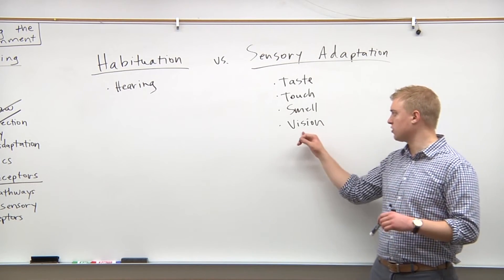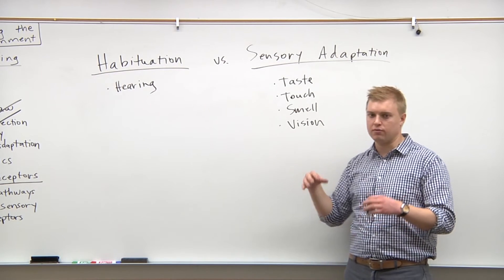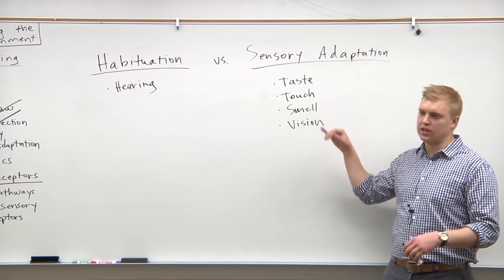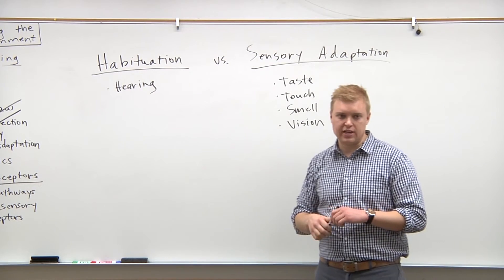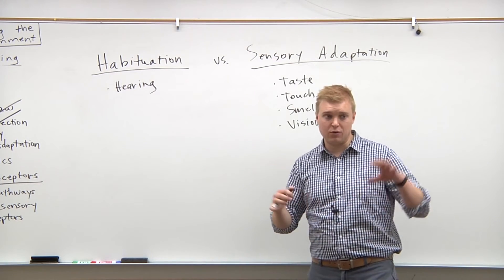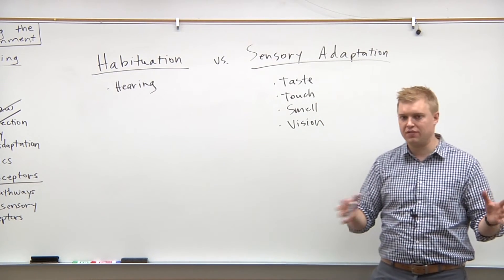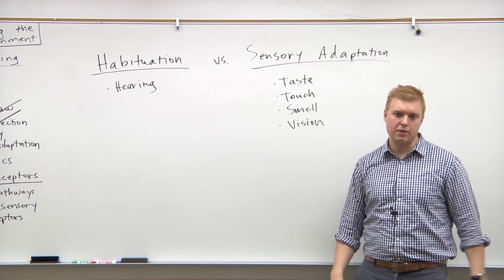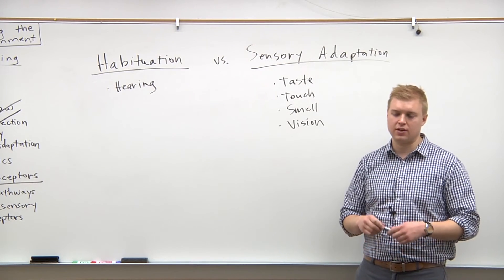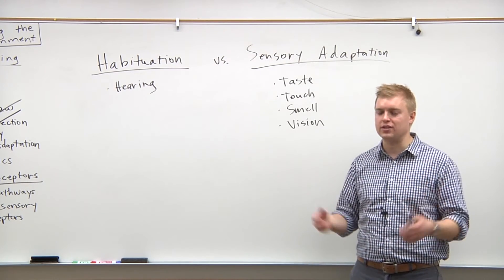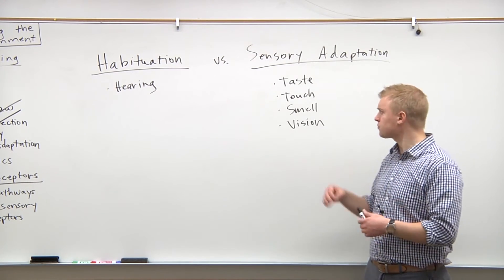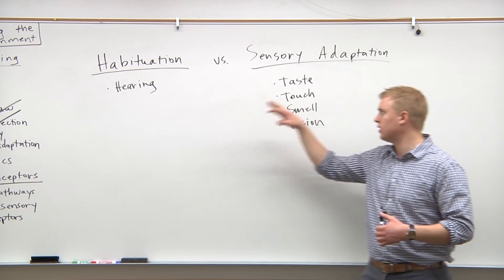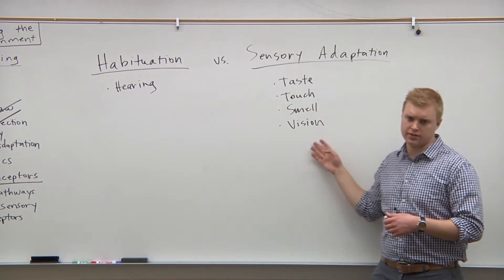With vision, your eyes adapt to certain bright or dark conditions. With smell, think about walking near a stinky garbage can — at first it smells really bad, but if you have to work near it and throw in different bags of garbage, you tend to get used to that smell. So again, habituation deals just with hearing, while sensory adaptation applies to these four senses: taste, touch, smell, and vision.